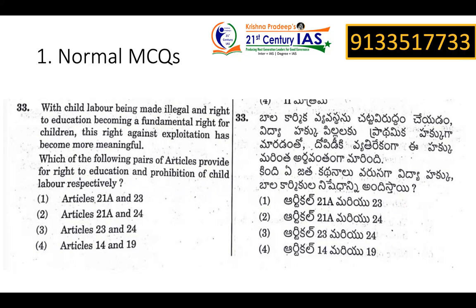For example: 'Which of the following pairs of articles provide the right to education and prohibition of child labor respectively?' If you have 4 options, you can select the correct one. The answer is Article 21 and Article 24. This is a normal MCQ.